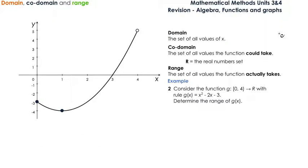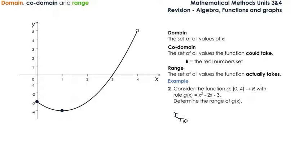The next function is a quadratic function. We have g(x) equals x squared minus 2x minus 3, with domain from 0 to 4. Looking at the graph, the lowest value of the function is actually below the endpoint, so you always have to check whether the turning point of the quadratic is within the domain. Let's calculate the coordinates of the turning point — just in case you don't have a graph and have to calculate them.